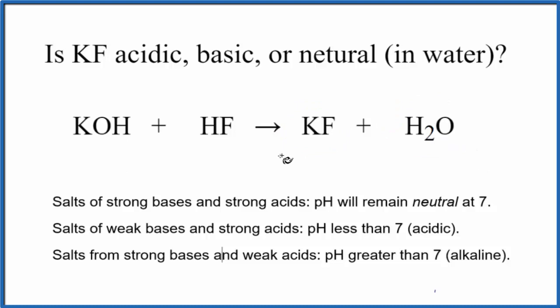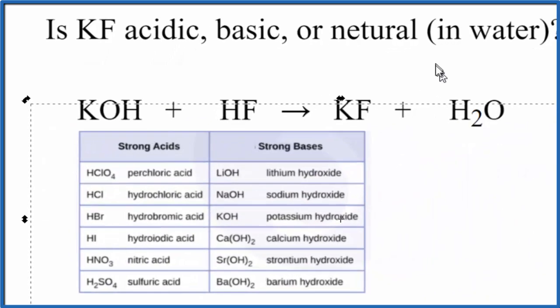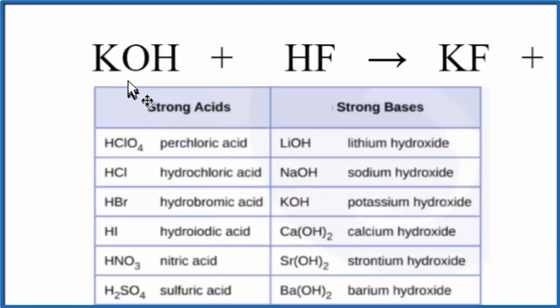Once we know the equation, we need to figure out the strength of the reactants. So this is a really useful table to memorize. If we look at the table, we're looking for KOH. And here it is, potassium hydroxide is a strong base, put SB up there.